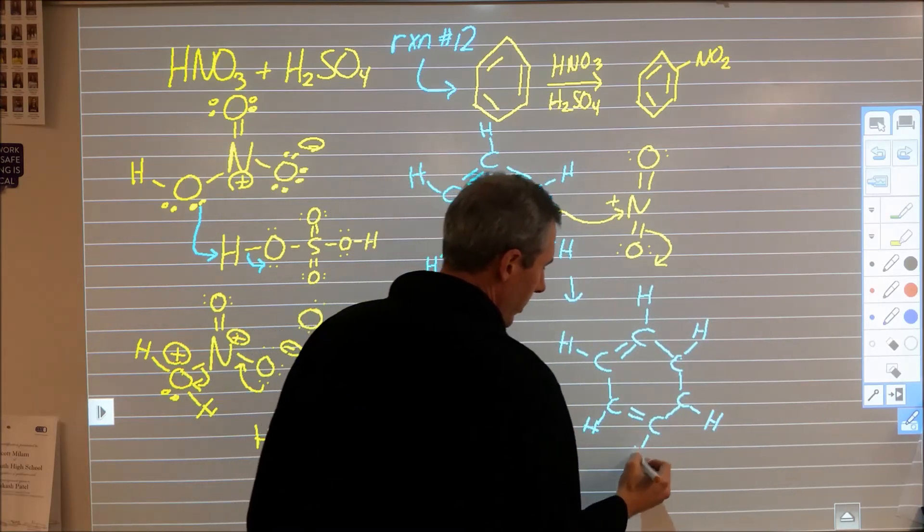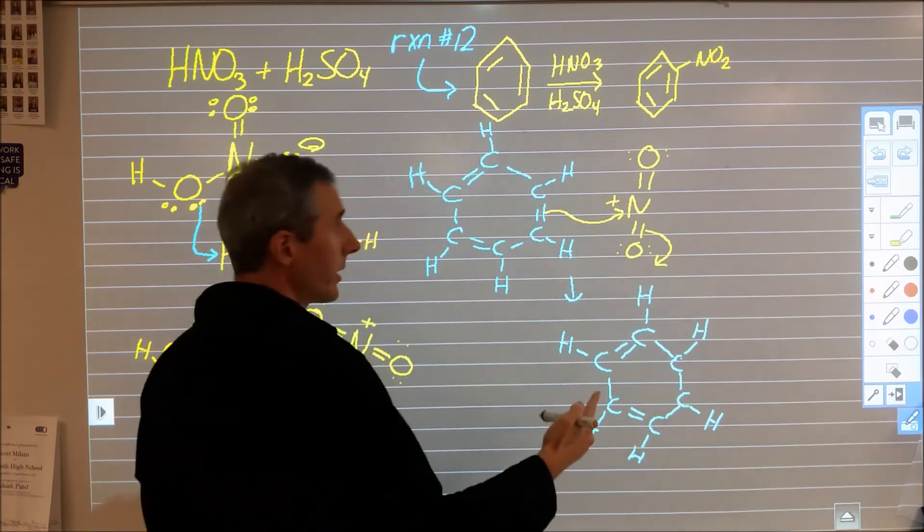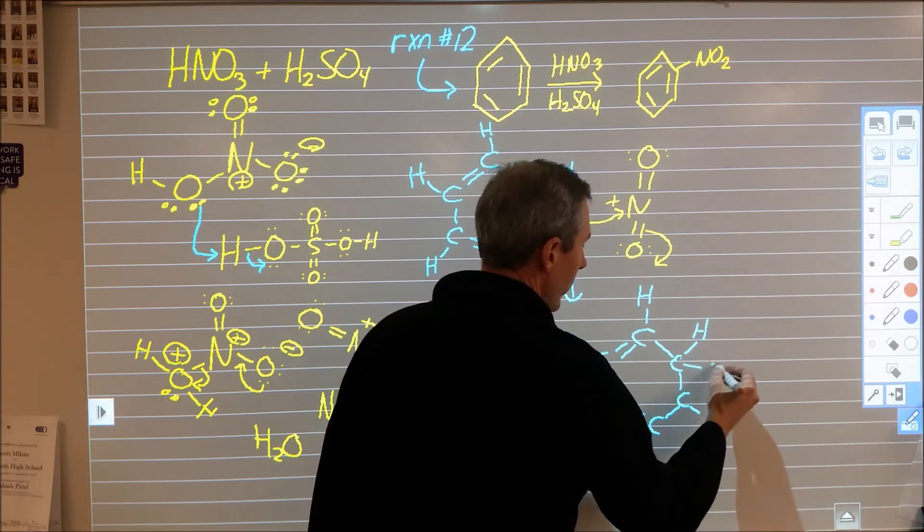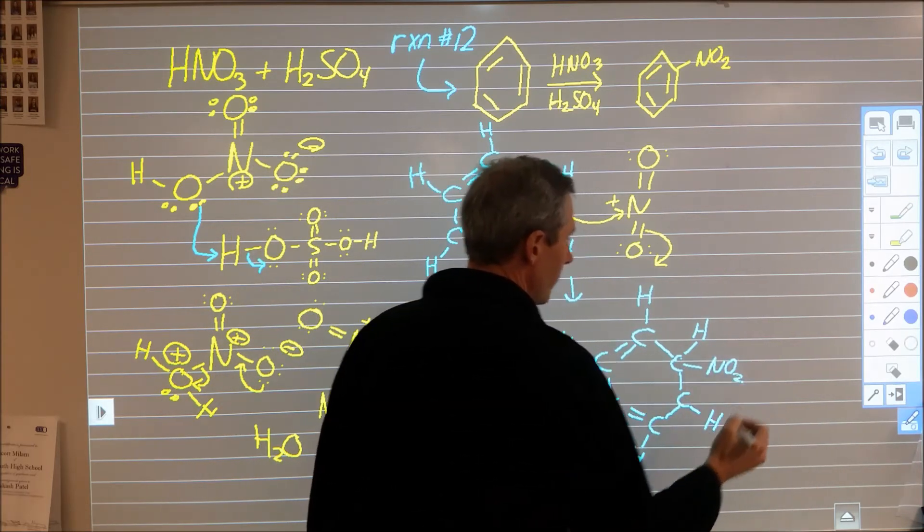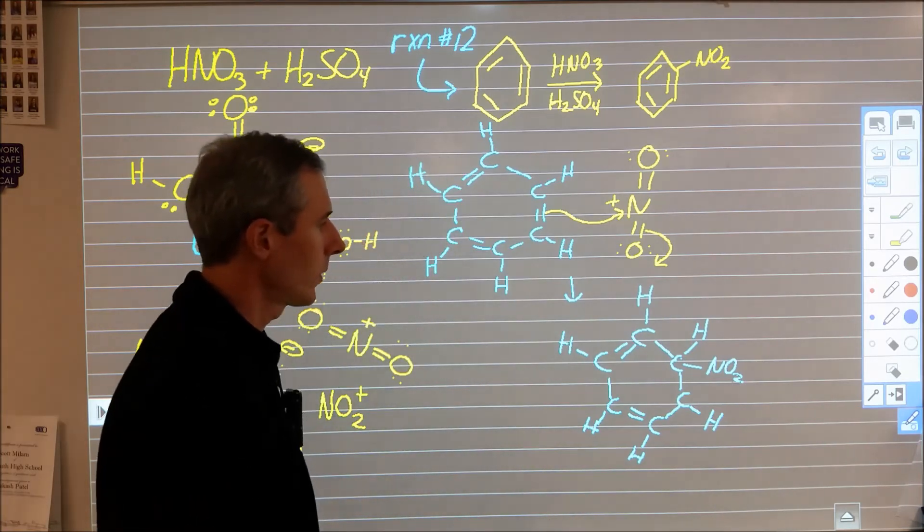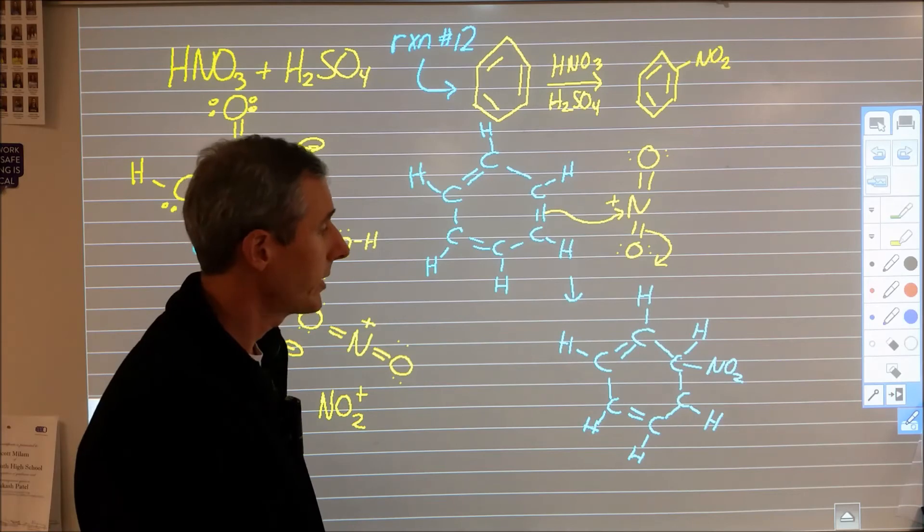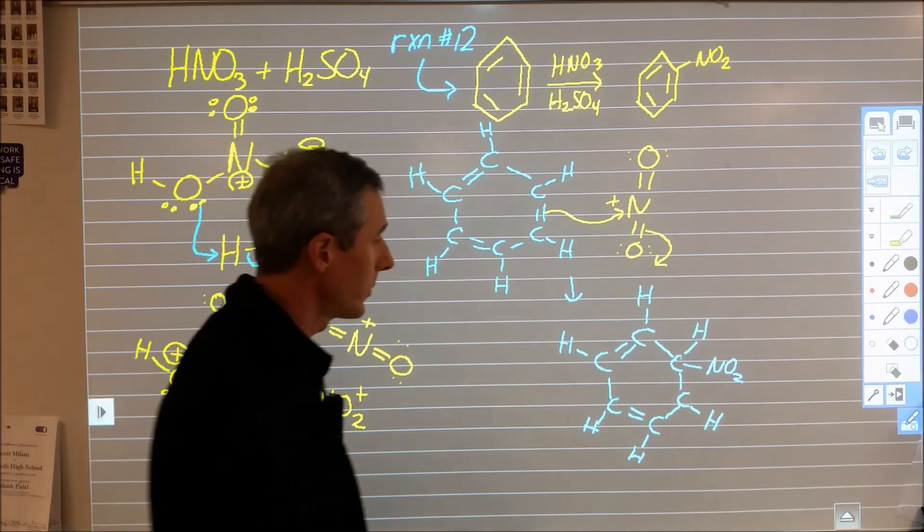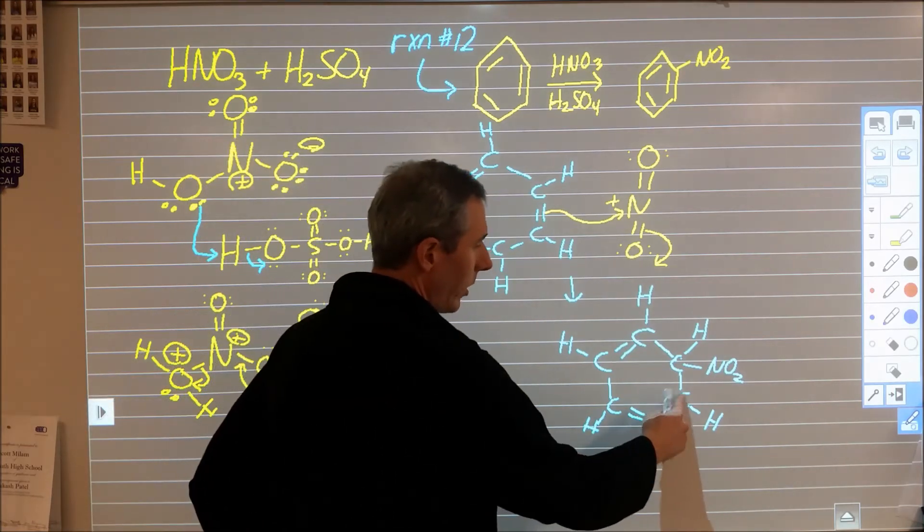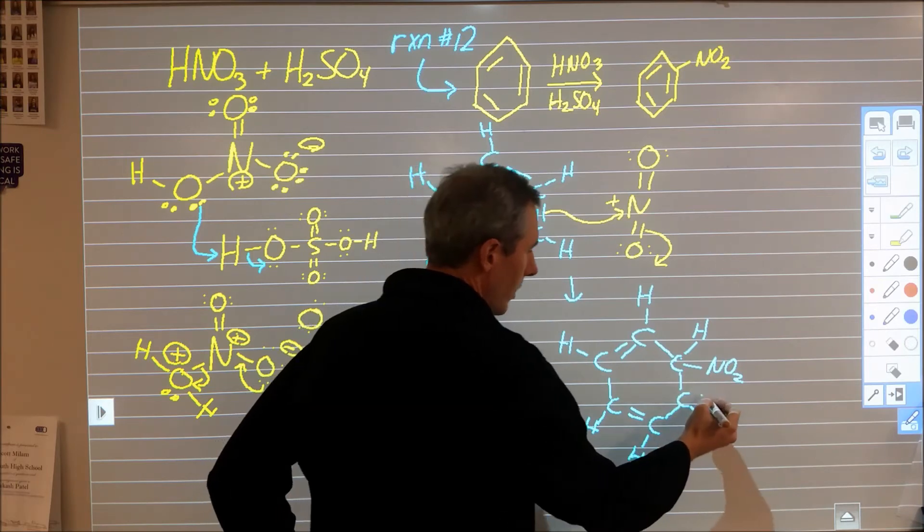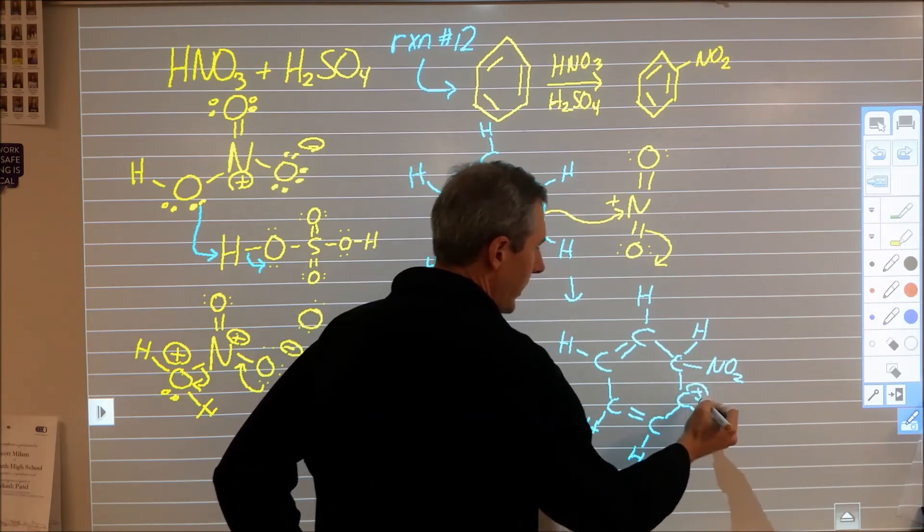We have a hydrogen here and here as well as over here. Now we need to pick either one of the carbons - it doesn't matter which - but one of them gets the NO2. Let's put the NO2 here and what we end up with is a positive charge. Specifically this carbon here only has three bonds to it so we have a positive formal charge at that particular carbon.